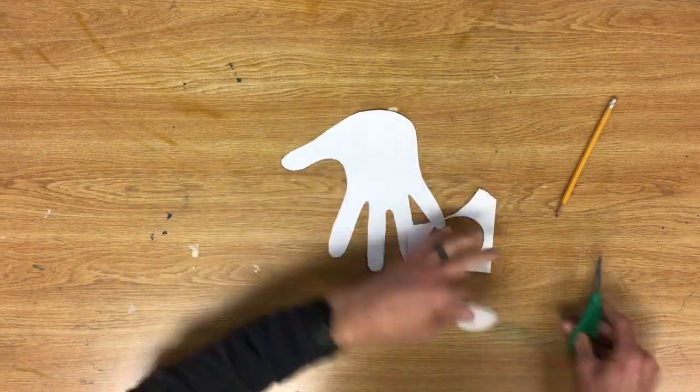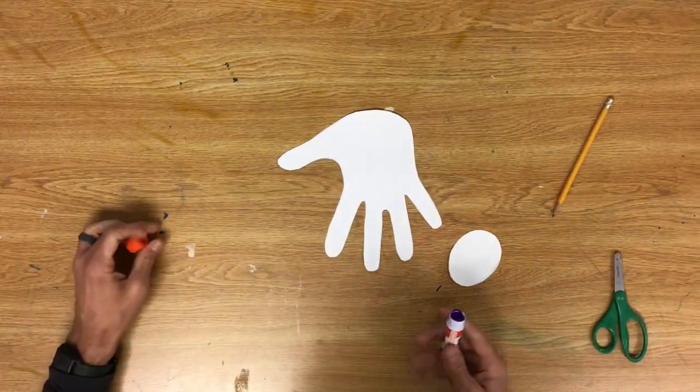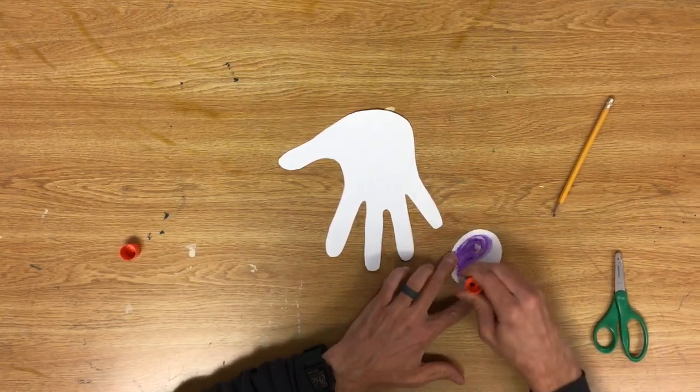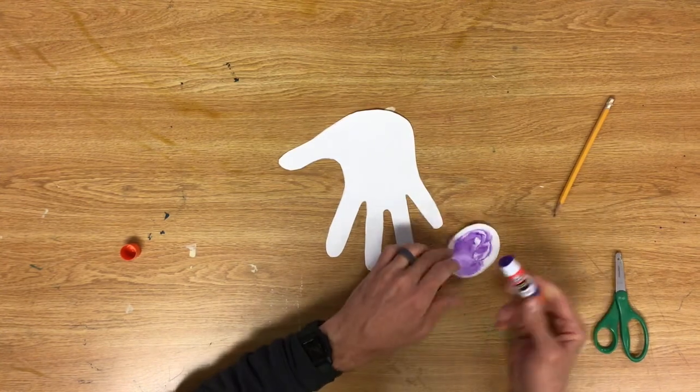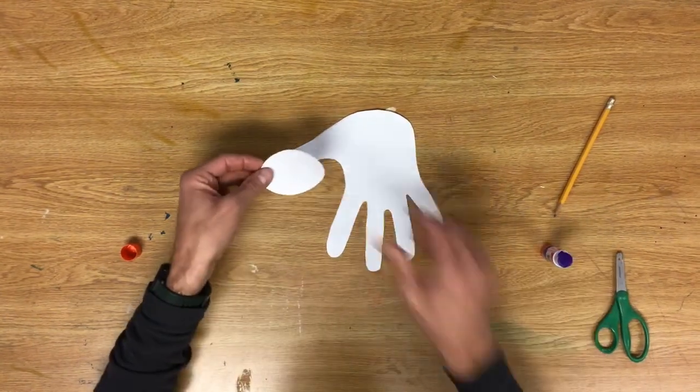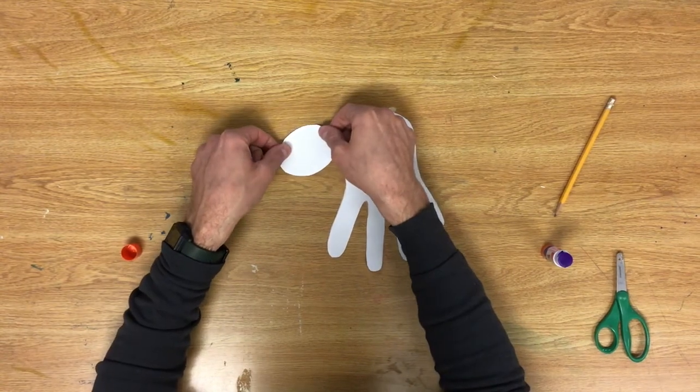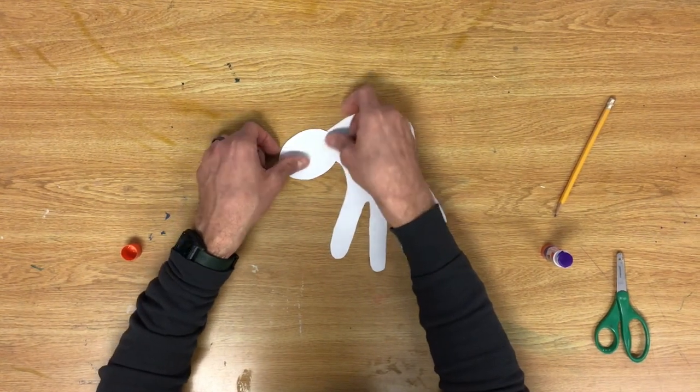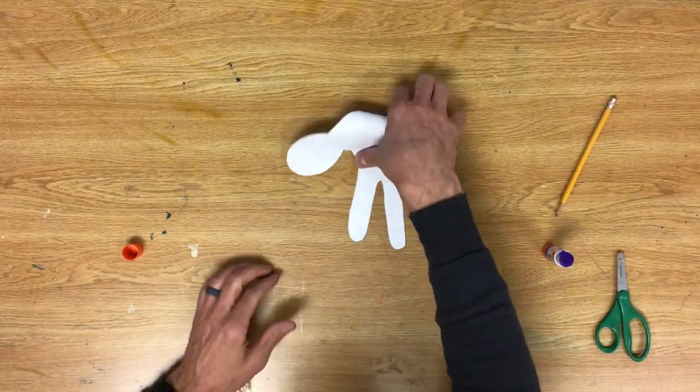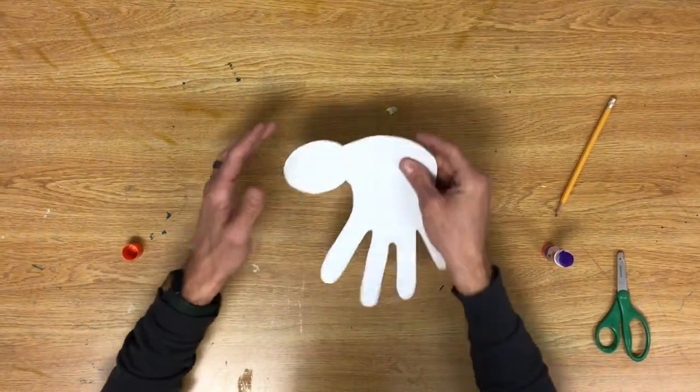All right, so I got it cut out. I'm going to get a little bit of glue, and I probably don't need this much glue because I'm not going to pull it down. I'm going to glue it down right about here for my polar bear's head. Now it's sticking to the table a little bit, I'm going to let this dry a little bit here and then I'm going to draw my details.